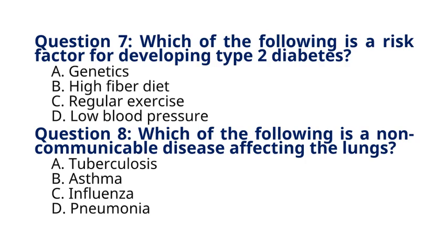Question 8: Which of the following is a non-communicable disease affecting the lungs? A. Tuberculosis, B. Asthma, C. Influenza, D. Pneumonia. The correct answer is option B, Asthma. Explanation: Asthma is a chronic non-communicable disease characterized by inflammation and narrowing of the airways, leading to recurrent episodes of wheezing, breathlessness, chest tightness, and coughing.